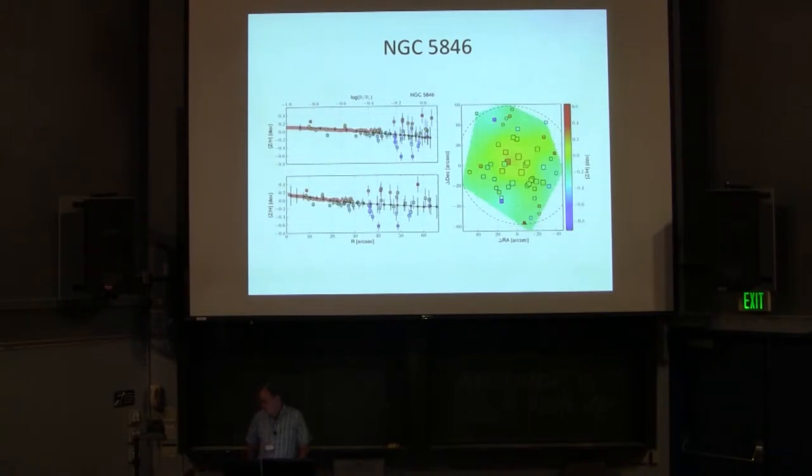Sauron looks in the optical so they're getting magnesium and iron lines generally that are giving them their metallicities, and we're doing our work in calcium triplet. So there did indeed have to be a calibration between ours and theirs, but that's only an offset so the slope is unchanged between the two works.